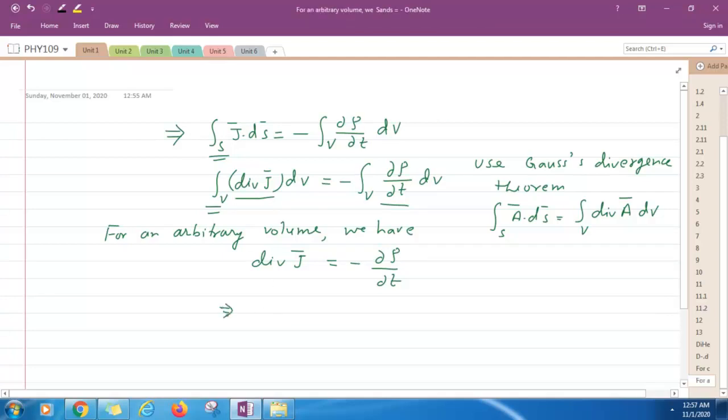Or you can write this relation where divergence can be replaced by del. Same meaning, del dot J plus curly rho by curly t is equal to 0. Now this equation is known as the continuity equation.